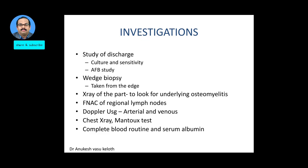Common investigations for an ulcer: since an ulcer has an exposed surface and discharge, you can take the discharge for culture and sensitivity study for proper antibiotic treatment. In specific conditions, an AFB study of the discharge culture can be done. In long-standing ulcers, an X-ray of the part can look for underlying bone disease or osteomyelitis. A wedge biopsy is done to rule out malignancy. Regional lymph nodes, if enlarged, can be assessed with FNAC. For arterial and venous disease, a Doppler ultrasound can be done. For tuberculosis, a chest X-ray and Mantoux test are done. A complete blood count and serum albumin are done to assess hemoglobin and albumin levels, which directly affect ulcer healing.